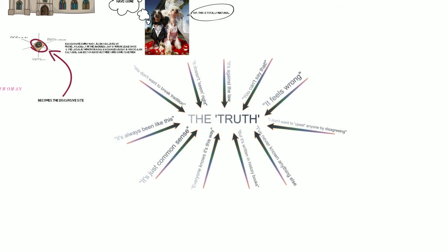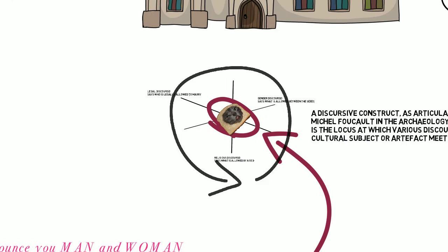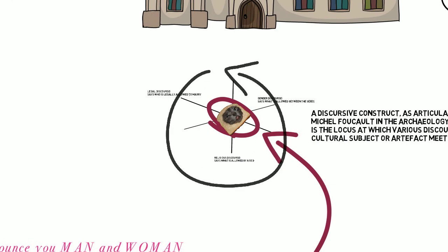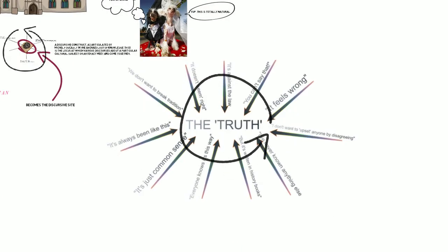Discursive structures are therefore self-perpetuating and reifying. They are the things that look natural but on closer examination only appear that way because they are supported by other discourses that resonate.